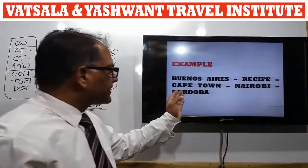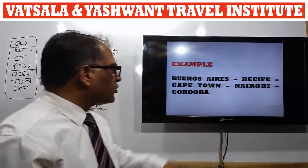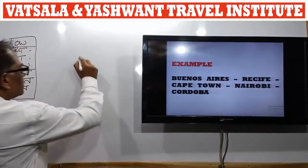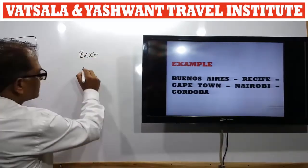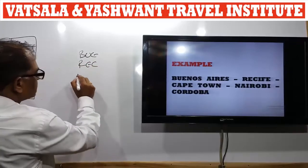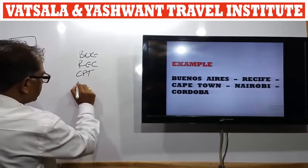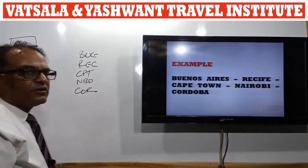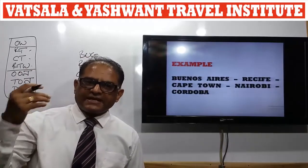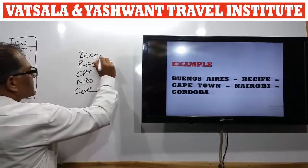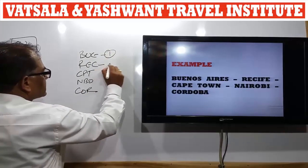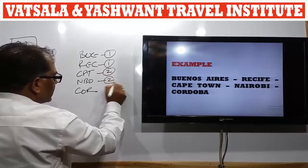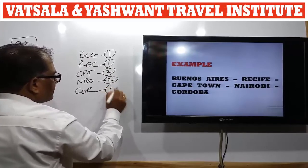Example two: Buenos Aires, Recife, Cape Town, Nairobi, Cordoba. First we will identify the areas. Buenos Aires is in Argentina, area 1. Recife is in Brazil, area 1. Cape Town is in South Africa, area 2. Nairobi is in Kenya, area 2. Cordoba is in Argentina, area 1.